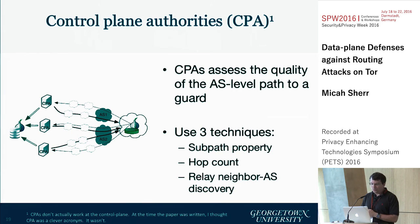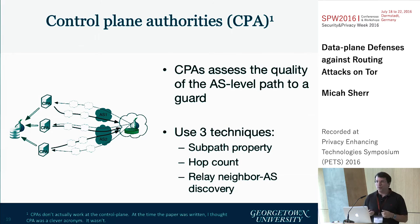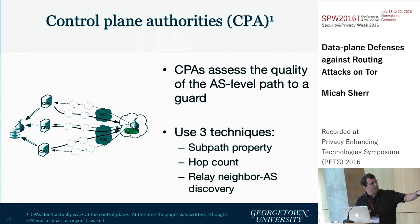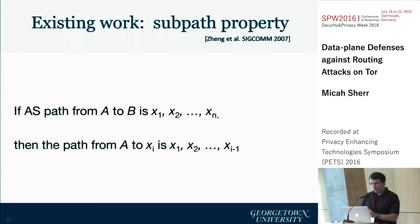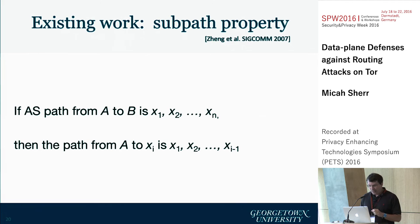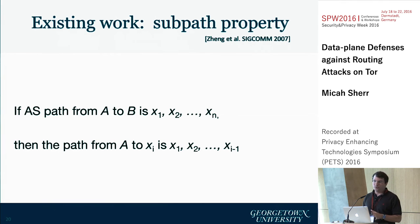These CPAs assess the quality of the AS-level path to a guard. We use three techniques. The subpath property was proposed elsewhere — we're borrowing from that. We found it is insufficient and vulnerable to manipulation, so the hop count and the relay-neighbor AS discovery protocols are ones we've used to boost the security of the subpath property. The subpath property says that if there's an AS path from AS A to B, and that path is X1, X2 to XN, then the path from A to Xi is X1, X2, up to Xi minus 1. We did some measurements on the internet to confirm this generally holds true. If you think about how BGP works, this makes sense most of the time.